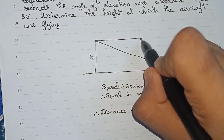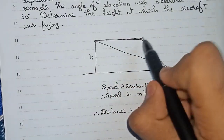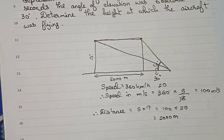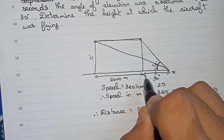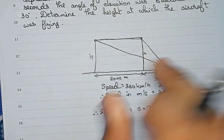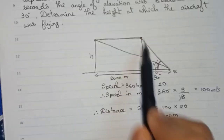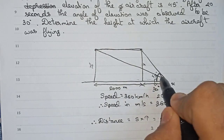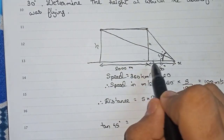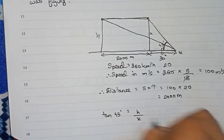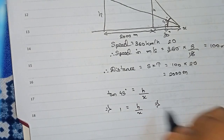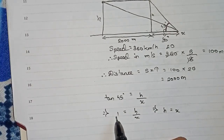So from the first position to the second position, the distance is 2000 meters. The horizontal distance from the observation point to directly below the first aircraft position we take as x. In this triangle with 45 degrees, tan 45 = height/base = h/x. Since tan 45 = 1, we get h = x.